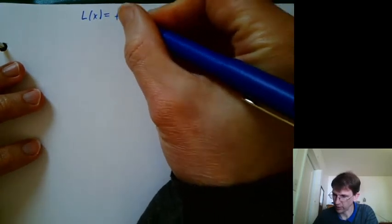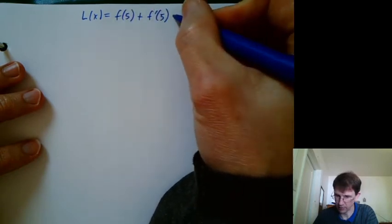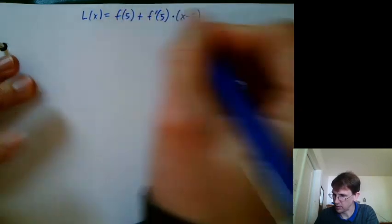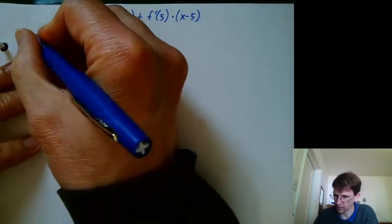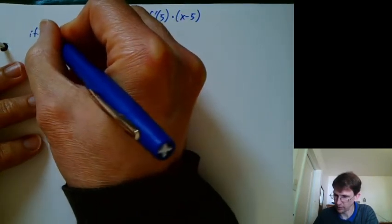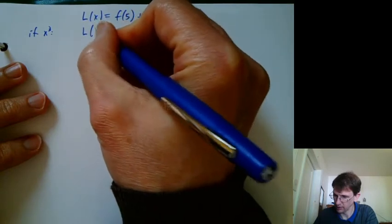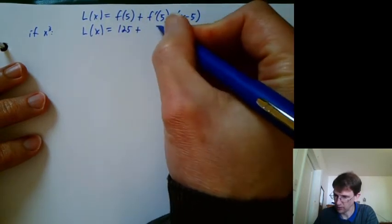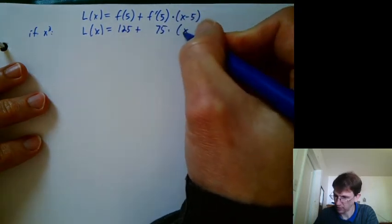L of x equals f of 5 plus f prime of 5 times x minus 5. That's in general. If we're using x cubed, then L of x was 125, that's 5 cubed, plus 75 times x minus 5.